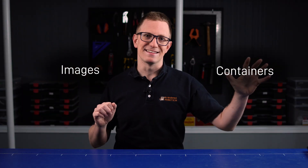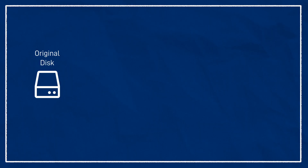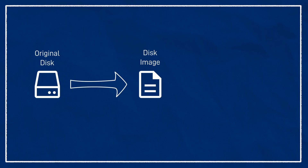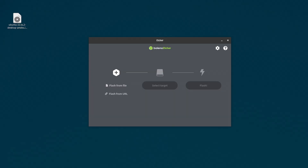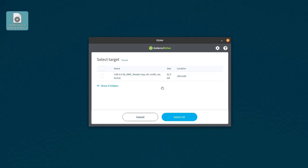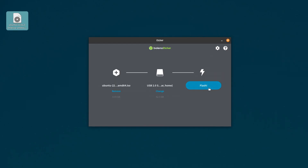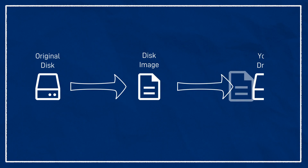Docker is a complex beast, and we're going to pick it apart bit by bit in the coming videos. But to begin with, there are just two concepts that you need to get your head around: images and containers. If you've ever installed an operating system before, you might have come across the idea of a disk image. A disk image is a file that contains a copy — a snapshot of the entire structure of a drive and all the data on it. If you're setting up a Raspberry Pi or a boot USB, you probably downloaded an image file like an ISO that you flashed onto a disk.